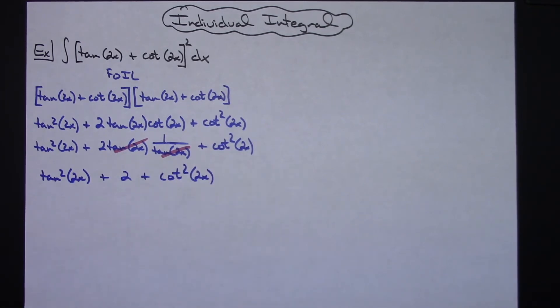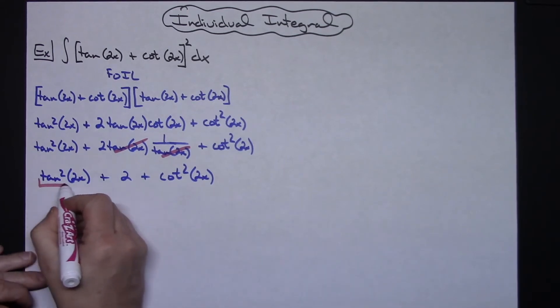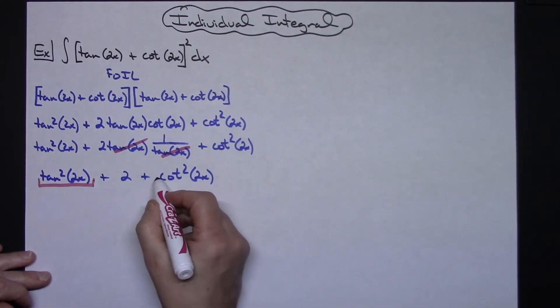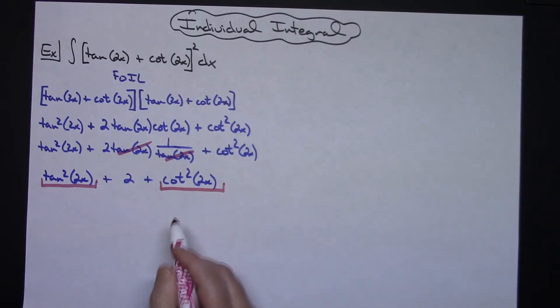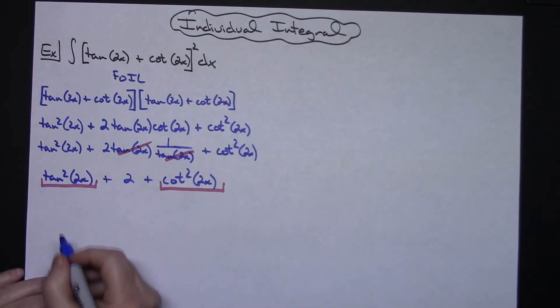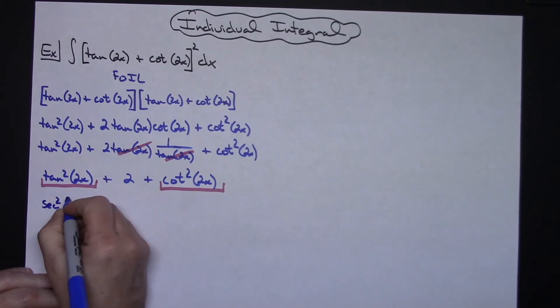Okay, now what we're going to do is we're going to use some of our Pythagorean identities. We're going to take a look at this tangent squared of 2x and this cotangent squared of 2x. Both of those have substitutions that I can do that pertain to the reciprocal identities.